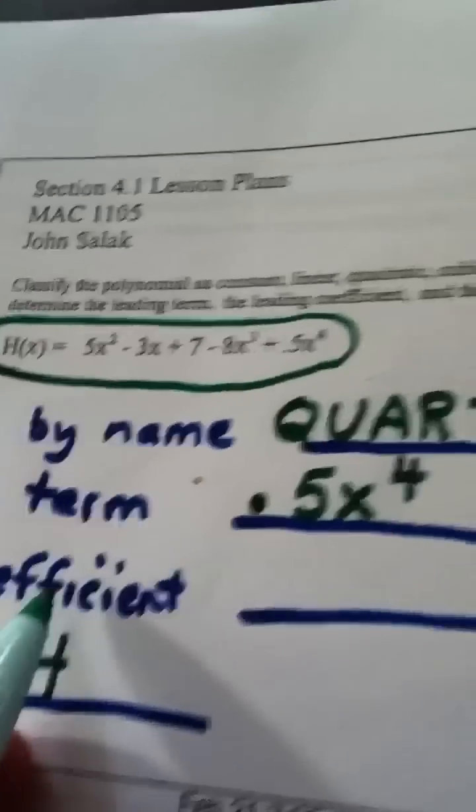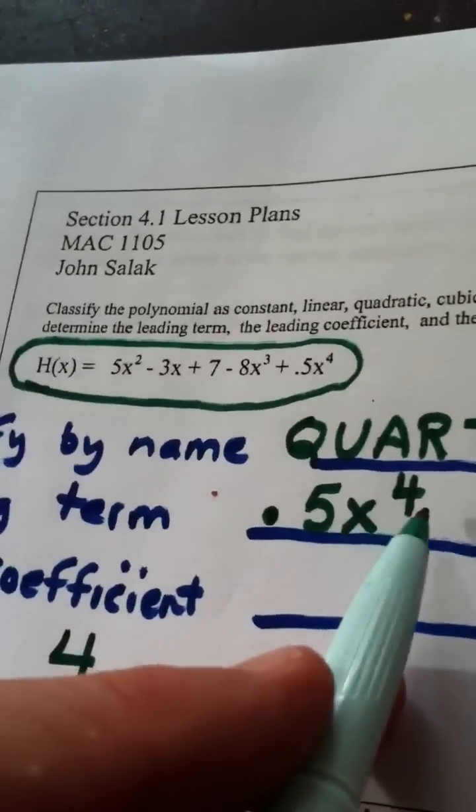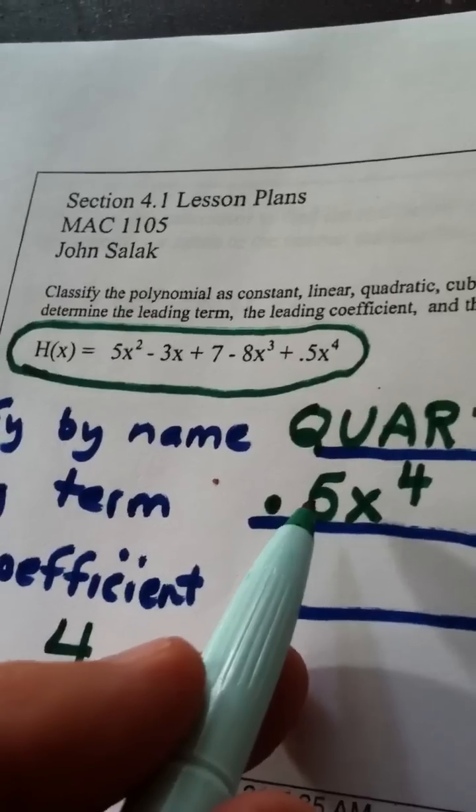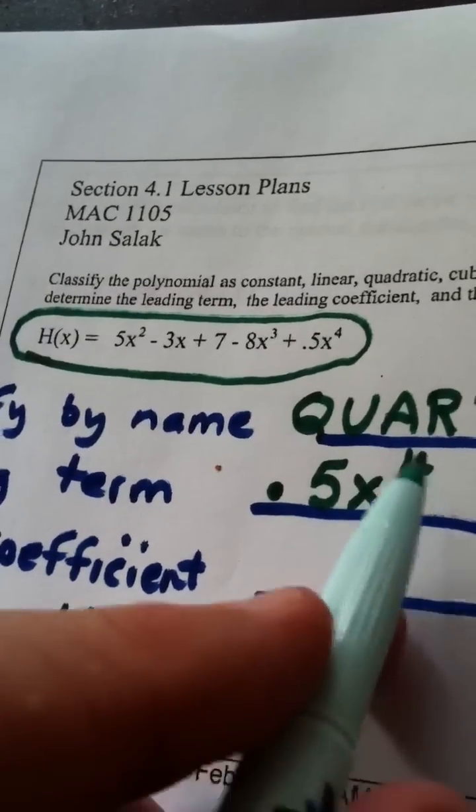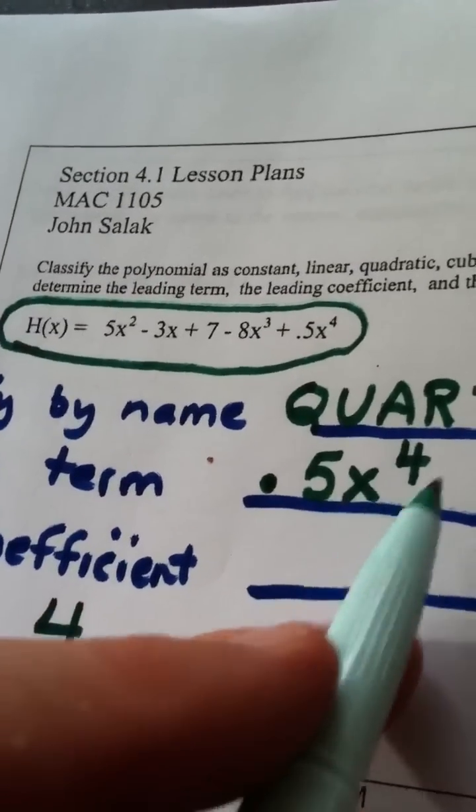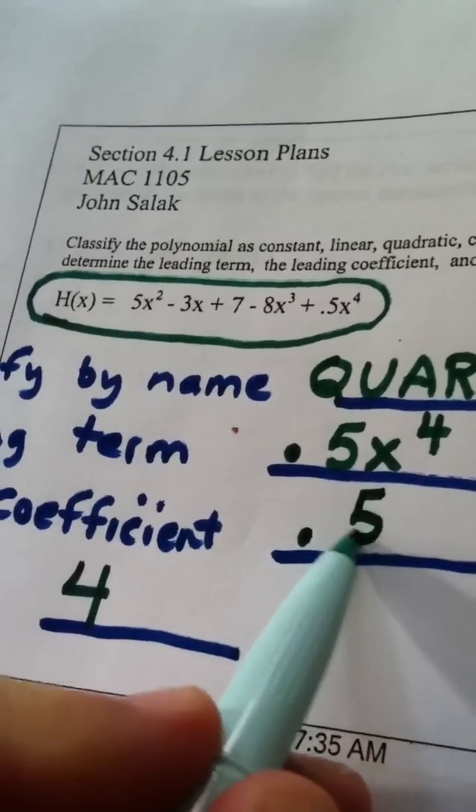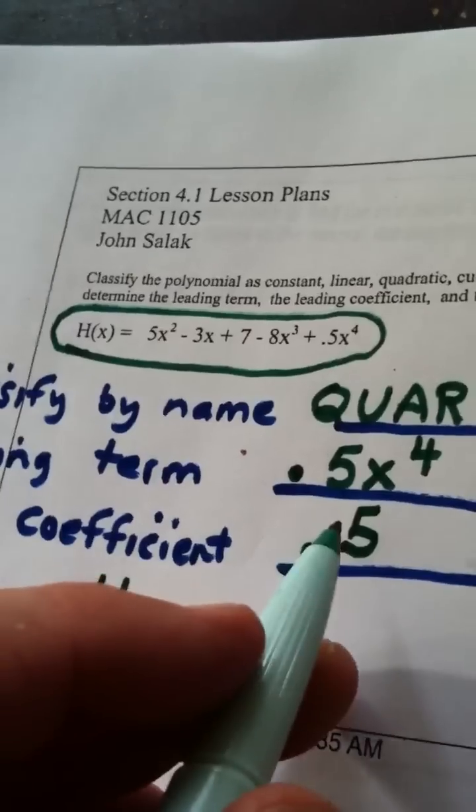My final question asks what the leading coefficient is. Well, you look at the leading term, and you only take the coefficient, which means you take the real number in front of the variable expression. So in this case, the leading coefficient is 0.5.